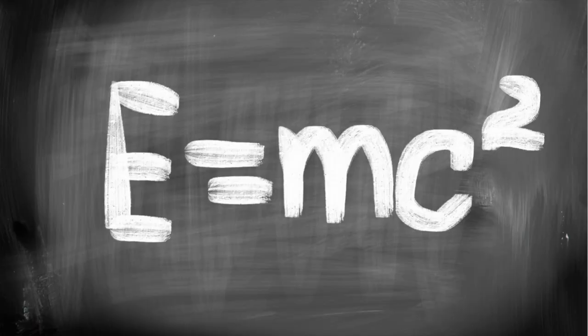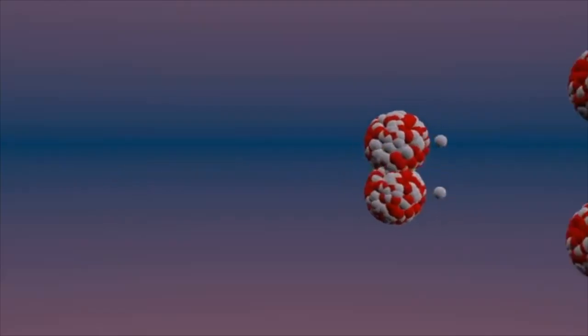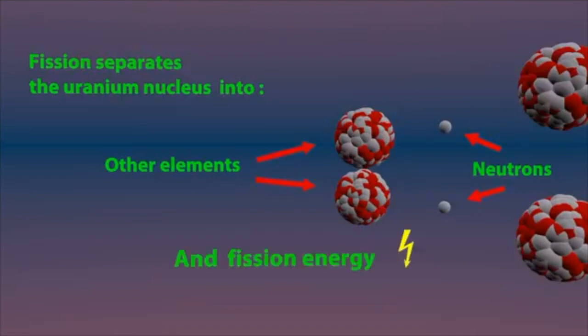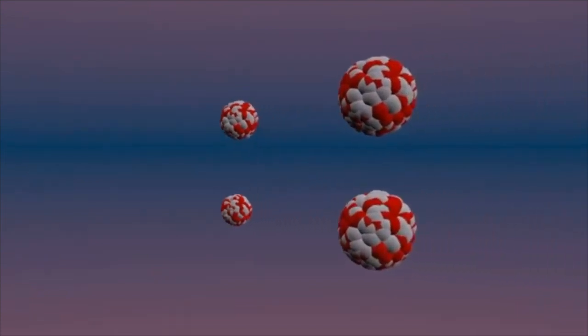Einstein's theory of relativity includes the famous equation E equals mc squared. This equation states that energy is equal to mass multiplied by the speed of light squared. In nuclear fission, the nucleus of an atom is split into two smaller nuclei. When this happens, a tiny amount of mass is converted into an enormous amount of energy — in accordance with Einstein's equation, where a small amount of mass is multiplied by the square of the speed of light to produce a large amount of energy.